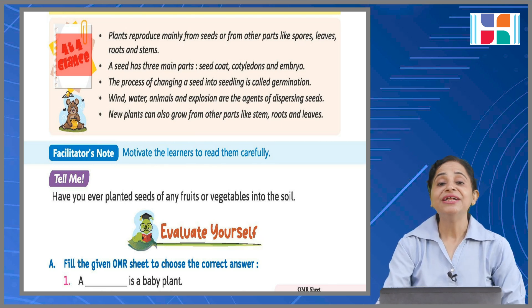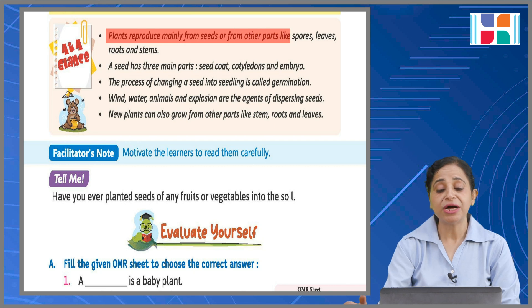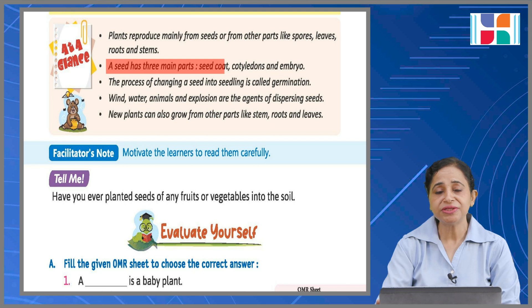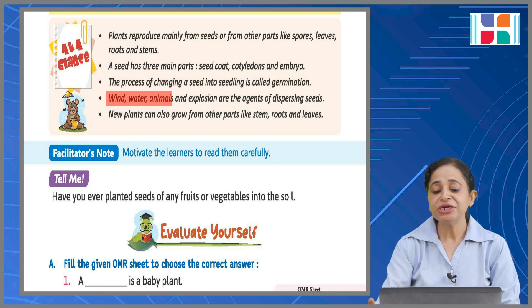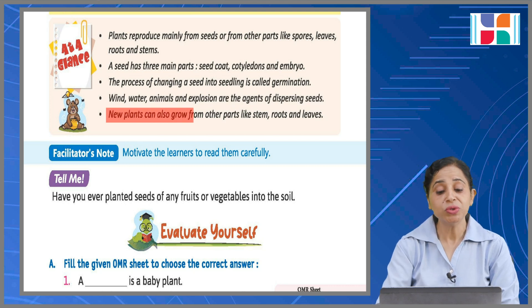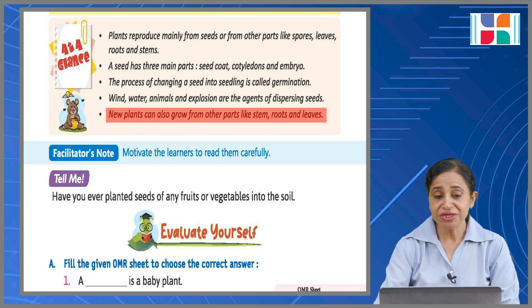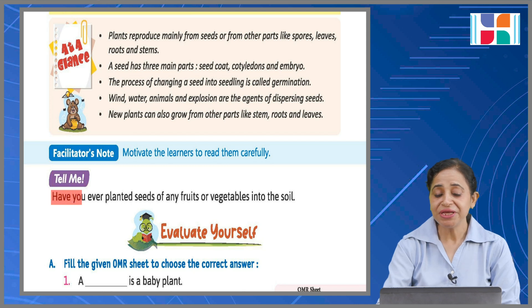If you have read the chapter carefully and want to recall everything, let's have a look at the summary. Plants reproduce mainly from seeds or from other parts like spores, leaves, roots, and stems. A seed has three main parts: seed coat, cotyledons, and embryo. The process of changing a seed into a seedling is called germination. Wind, water, animals, and explosions are the agents of dispersing seeds. New plants can also grow from other parts like stems, roots, and leaves.